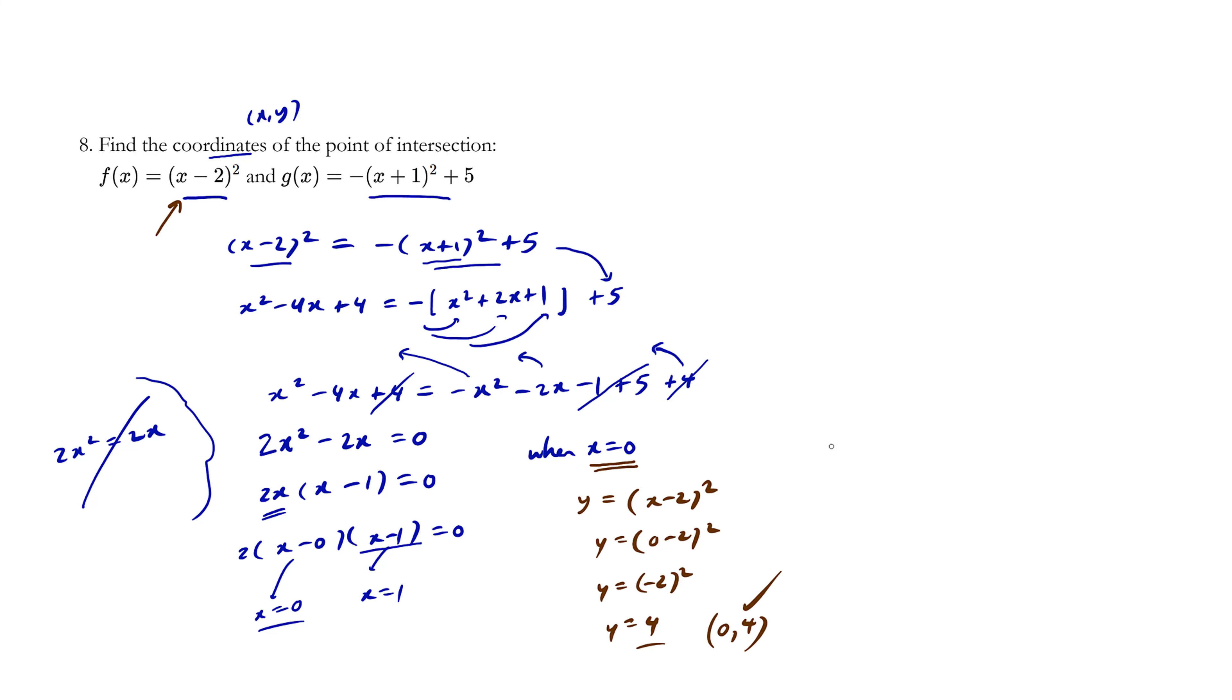Now when x equals 1, it comes from here. We'll use the same graph. You just have to substitute 1 now. 1 minus 2 squared. y equals negative 1 squared. So we get 1. 1 comma 1.